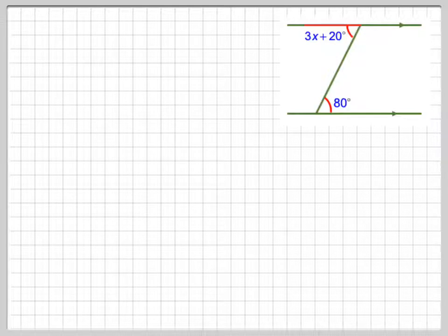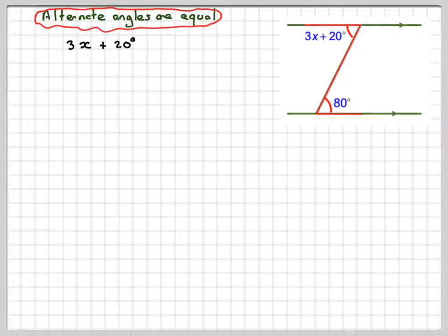In the second situation we have what's known as a z-angle, or alternate angles, and alternate angles are equal. So straight away I can say that 3x plus 20 will be equal to 80 degrees, and then solve this equation.